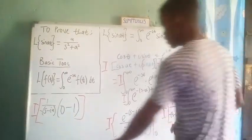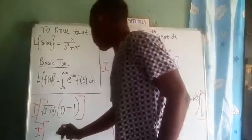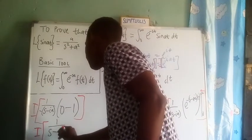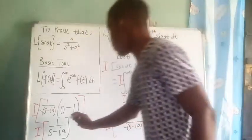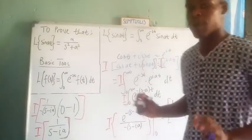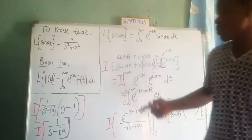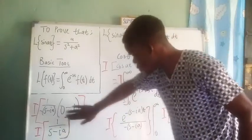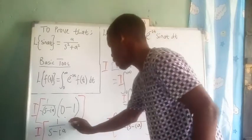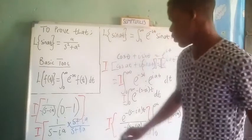We see that negative 1 times negative (s minus ia) in the denominator gives us 1 over (s minus ia). We are not done yet — we need to remove i from the denominator. To do this, we rationalize by multiplying numerator and denominator by the conjugate of the denominator, which is (s plus ia), giving us (s plus ia) divided by (s plus ia).